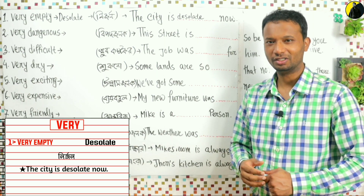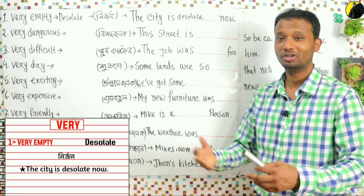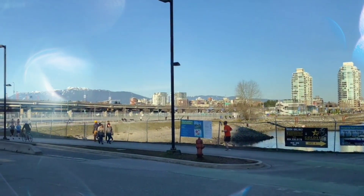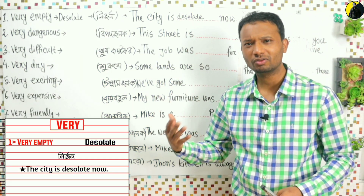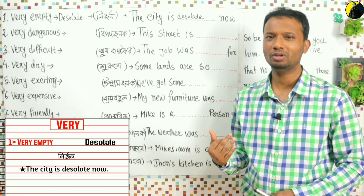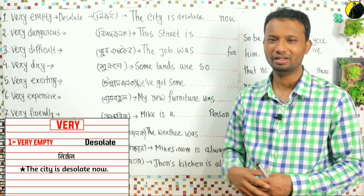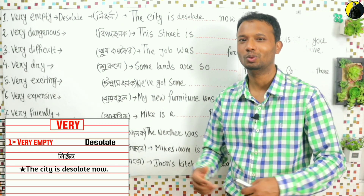Think of a situation where there are no people in a place — like Dhaka city becoming empty. Everyone has gone back to their villages. 'The Dhaka city is now desolate.' The more specific examples we learn, the better we remember the words. When we see them next time, it will ring a bell. So repeat: desolate.